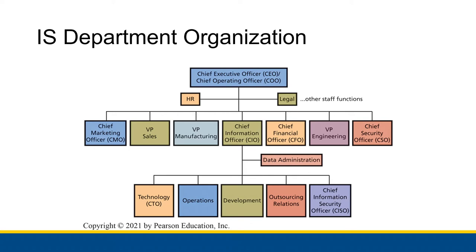The chief information officer is going to lead the information systems department, which has a lot of different subgroups within it. You have a data administration group, a chief technology officer, operations, development, outsourcing relations, and all those kinds of jobs. You might also have a chief information security officer working under the chief information officer, not to be confused with the chief security officer, which might have a more general role of security within the entirety of the business.